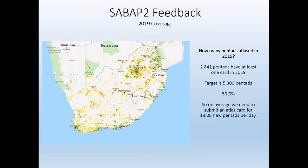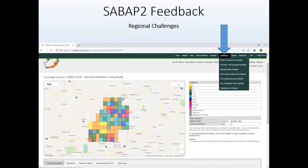It's going to become increasingly difficult to find new pentads not yet atlased in 2019, but please have a look at the coverage map on the SubAve2 website. Select 2019 and look for pentads near you that haven't been atlased. Then go and try to submit a card for those pentads — we will appreciate that.